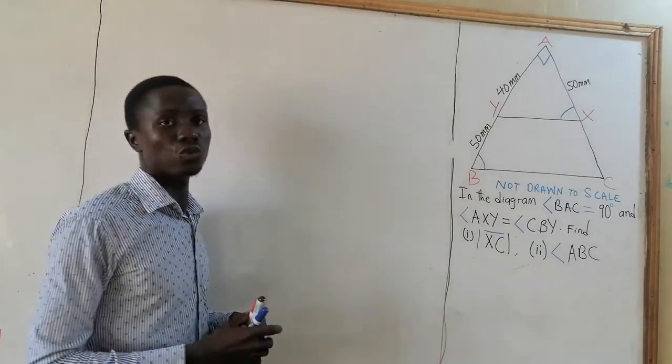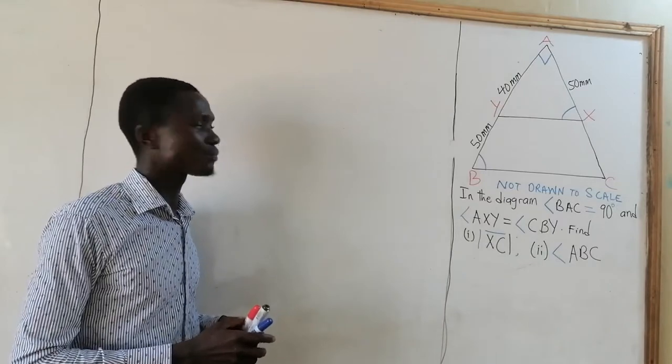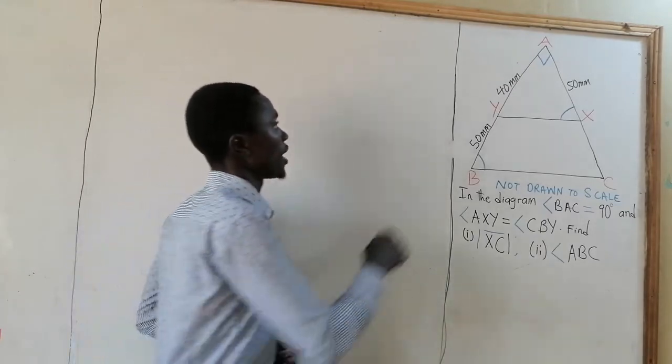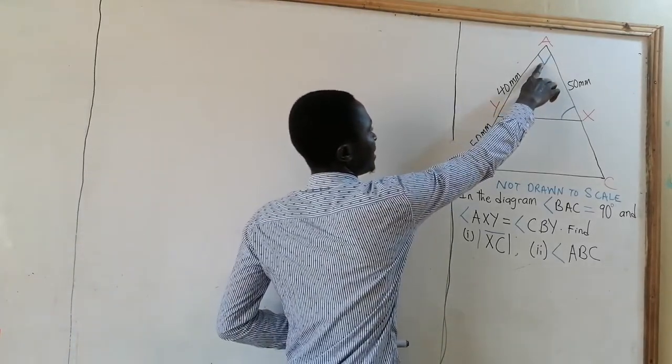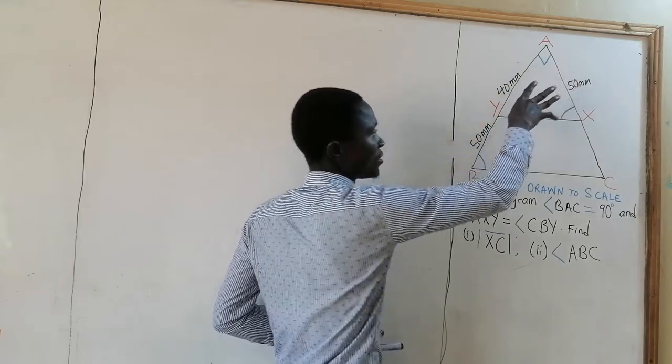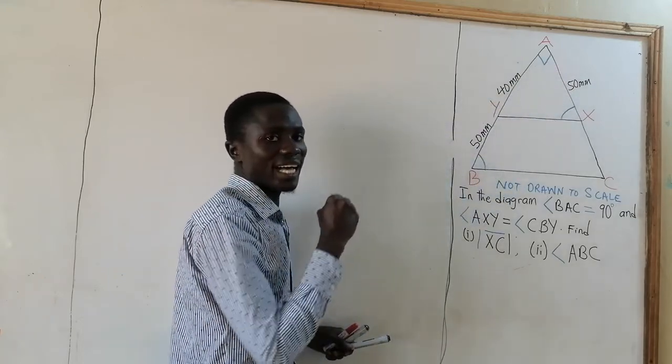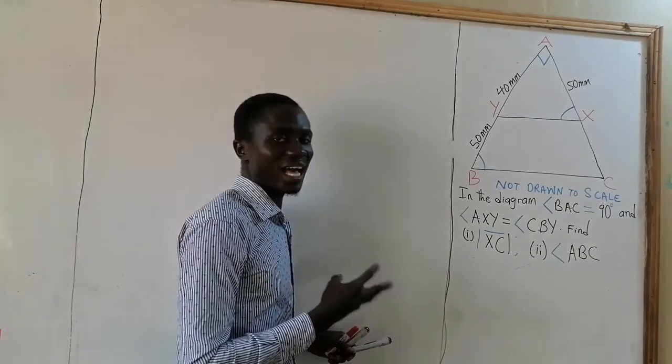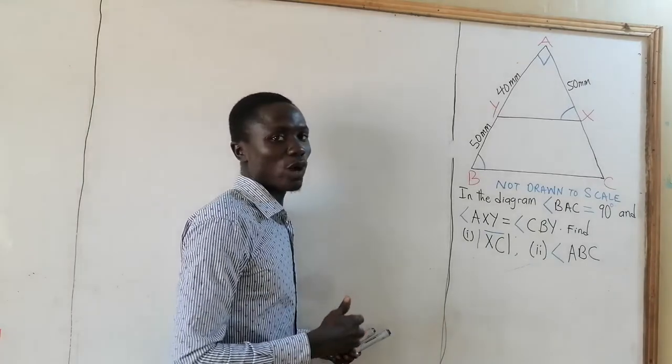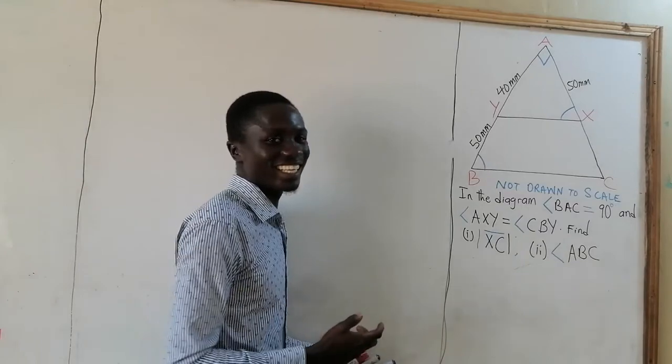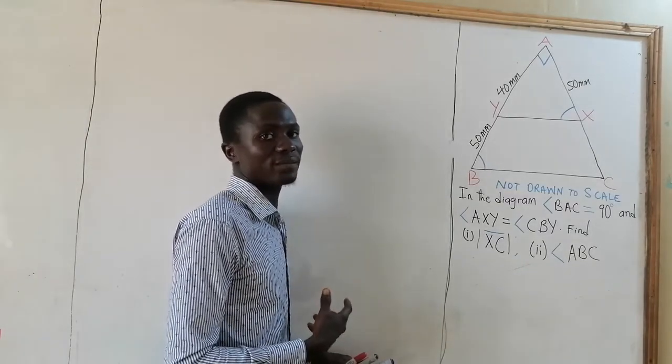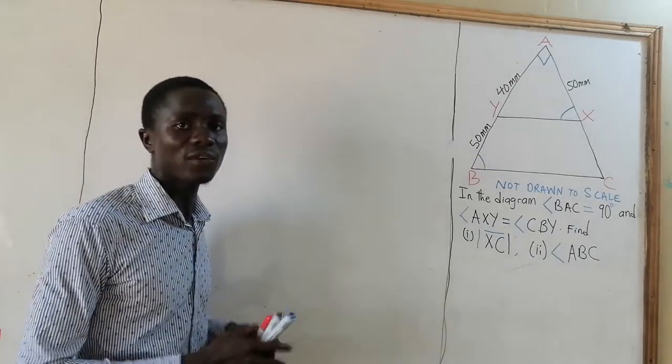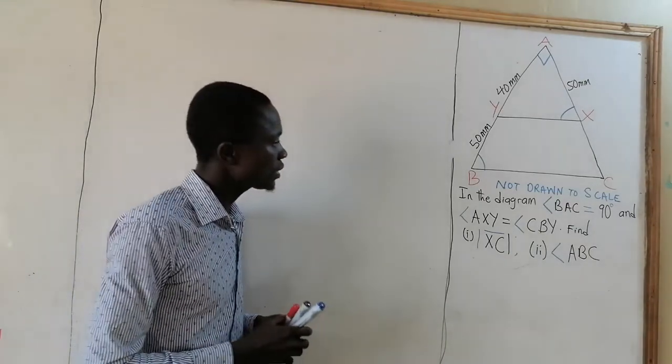Now let's see how we find the solution to this WAEC past question. The first thing we should look at is we have 90 degrees here, so it means we have a right-angled triangle. So our SOHCAHTOA will work for us, and Pythagoras's theorem will also help us. So you think of Pythagoras's theorem and SOHCAHTOA if you have a right-angled triangle.